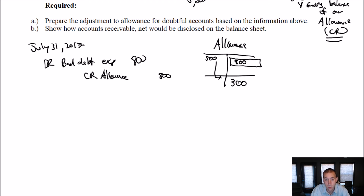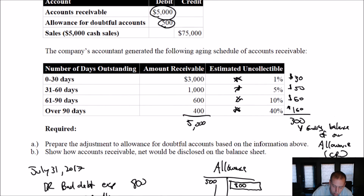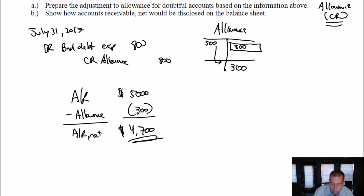It says show how accounts receivable is going to be disclosed on the balance sheet. AR minus the allowance equals net AR. Our accounts receivable was $5,000. The allowance was $300 credit. So $5,000 minus $300 means $4,700 is our net AR. I'm legally owed $5,000, I don't think I'm going to collect $300 of it, so the net amount — the amount I actually expect to collect — is $4,700. This is the amount we report to shareholders.